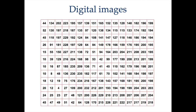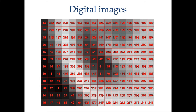Why do we have these numbers? Low numbers such as 0, 1, 10 represent dark parts of the image, while high numbers represent bright parts of the image.